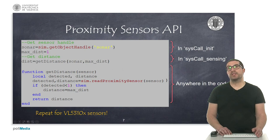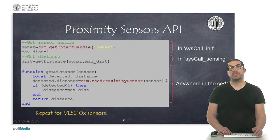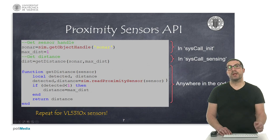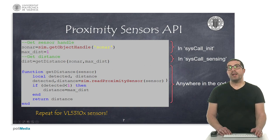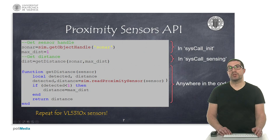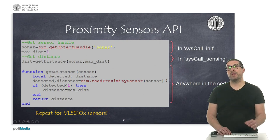If we look at the getDistance function, we see that sim.readProximitySensor is called inside this function — this is the CoppeliaSim function that allows us to obtain the sensor distance. This function returns two output arguments: the first indicates if an object has been detected, while the second returns the distance to the closest object or obstacle. It is important that we should not use the distance value unless the detected variable is equal to one, otherwise the distance will return an unknown value and cause errors in subsequent calculations. This is why we always return the maximum distance even when no object is detected.